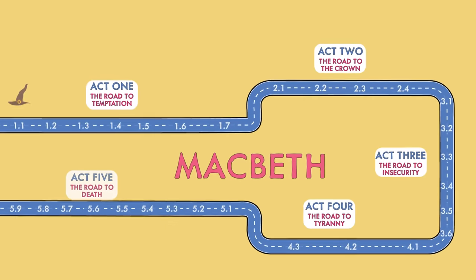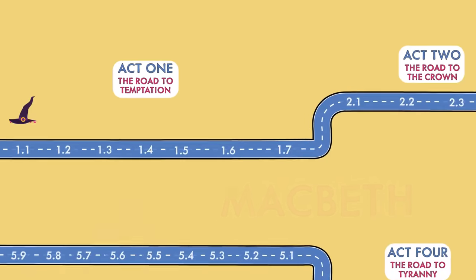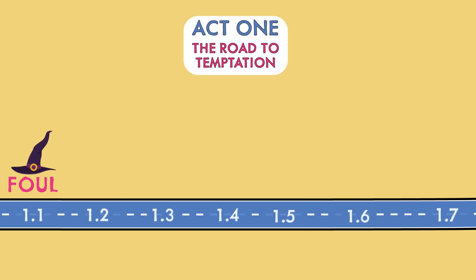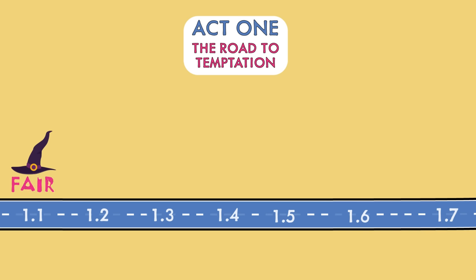The play begins with Three Witches telling us that fair is foul and foul is fair, which means that what appears to be good will be bad and vice versa. This is a recurring theme throughout the play, often referred to as appearance versus reality.